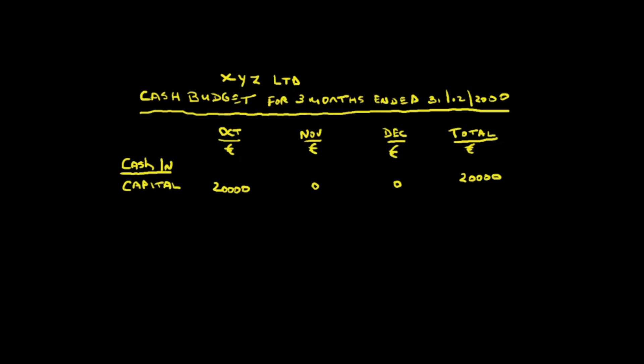Then we're going to sell goods. How much are we going to sell the goods for? We're going to sell them for 20 euros each. In the first month we're going to sell 1,000 units, the second month 2,000 units, the third month 3,000 units. Our sales in October will be 1,000 units multiplied by 20 euros — that's 20,000. But because we're giving one month's credit, we won't receive any money from our customers in October. Anything we sell in October, we get paid in November. So we're going to receive 20,000 in November from our customers.